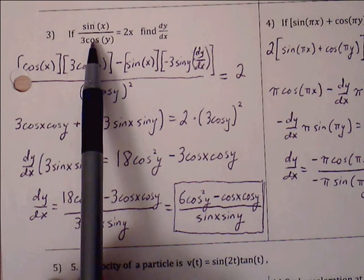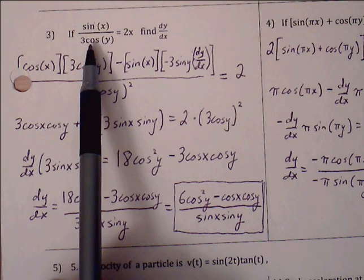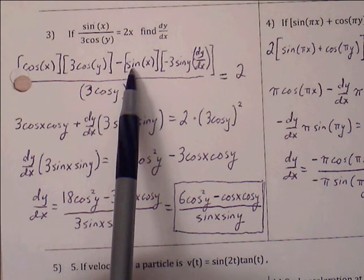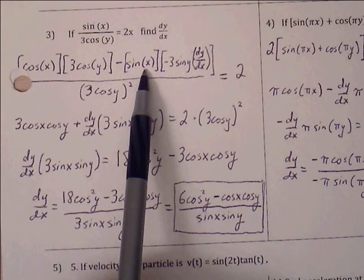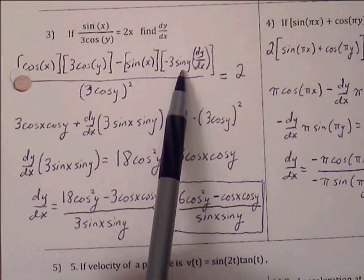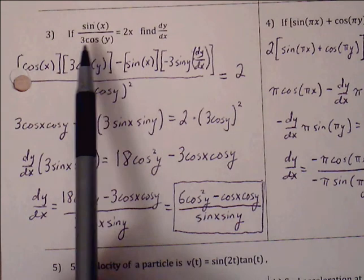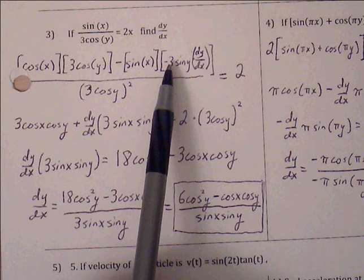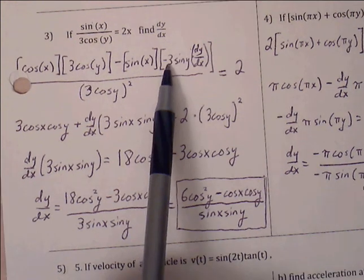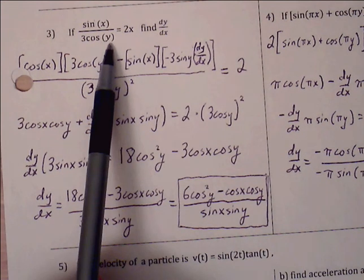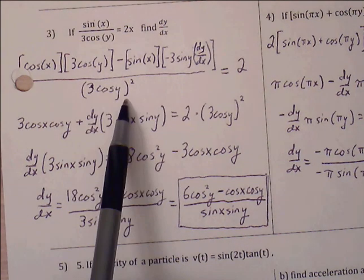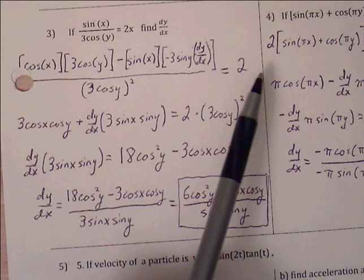Continuing with implicit differentiation: minus the top function sine(x) times the denominator's derivative. Since 3 cosine(y) becomes negative 3 sine(y) dy/dx — and remember, with implicit differentiation, every time we involve y's derivative we attach dy/dx — all over denominator squared, 3 cosine(y) squared, equals 2.